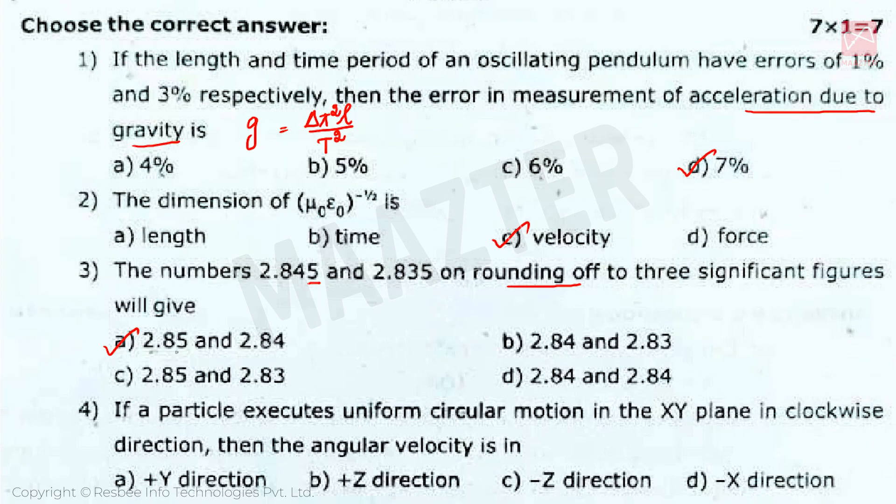Fourth question is: If a particle executes uniform circular motion in the xy plane in clockwise direction, then the angular velocity is in. Answer is minus z direction.